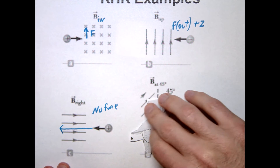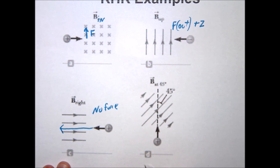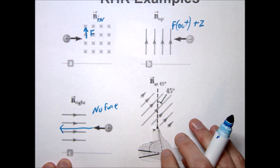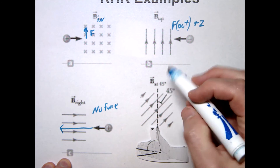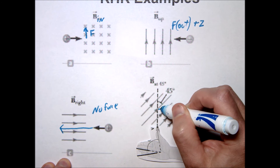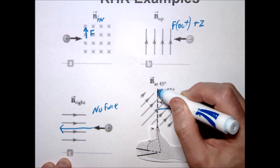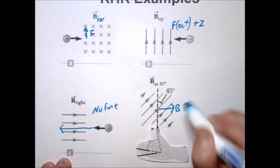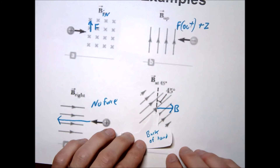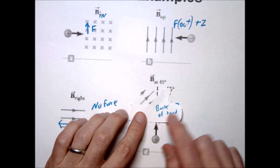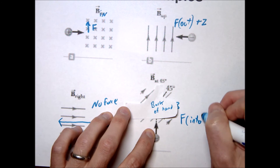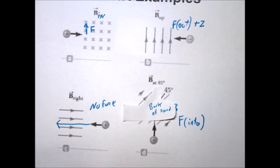Example D: the charge is moving at an angle. When dealing with an angle, it's often easier to find the component of velocity or B field that's perpendicular. Taking the perpendicular component of B and applying the right-hand rule — thumb following the velocity, fingers in the B field direction — the palm points downward. So the force pushes the positive charge into the page.